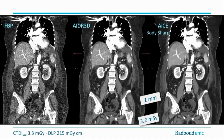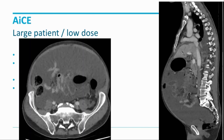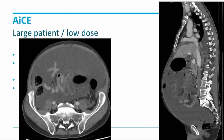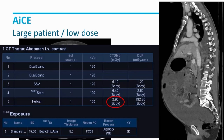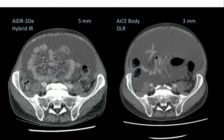This can be organ-specifically optimized. With the newest high-end regular scanners, at a dose of 3.2 millisievert, one millimeter sections, we get excellent image quality — even for large patient sizes at 100 kV, 2.9 millisievert CTDI — and still excellent quality. Compared to regular scanner five millimeter images, deep learning outperforms that by far.